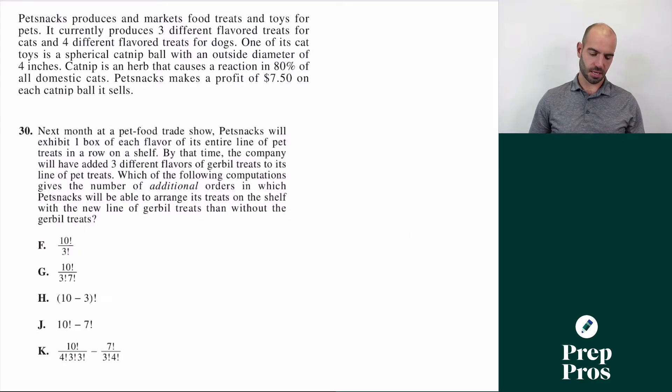Question 30 was a real stumper for students. It says, next month at a pet food trade show, Pet Snacks will exhibit one box of each flavor of its entire line of pet treats that are on the shelf. By that time, the company will have added three different flavors of gerbil treats to its line of pet treats. Which of the following computations gives the number of additional orders in which Pet Snacks will be able to arrange its treats on the shelf with a new line of gerbil treats than without?